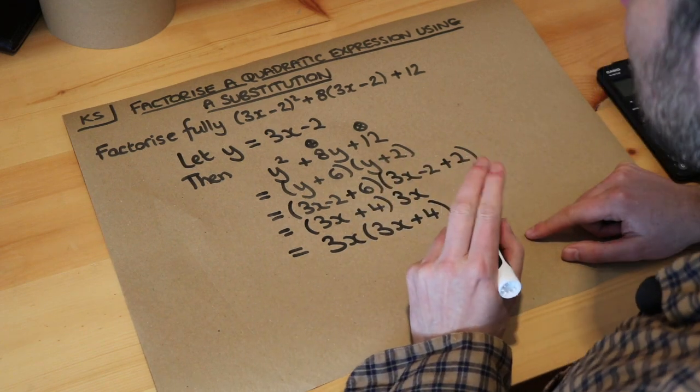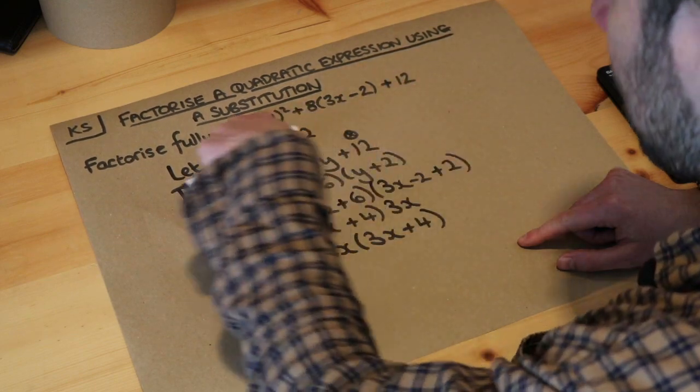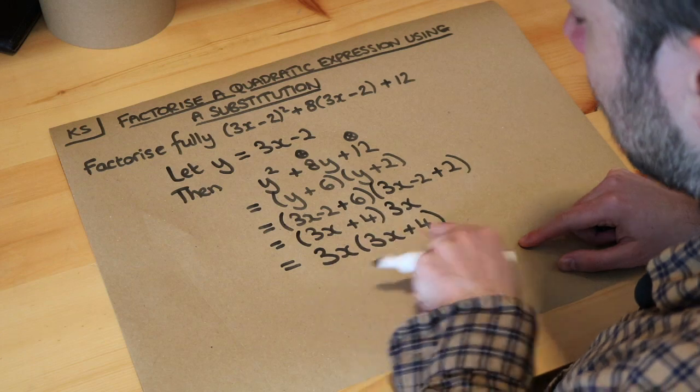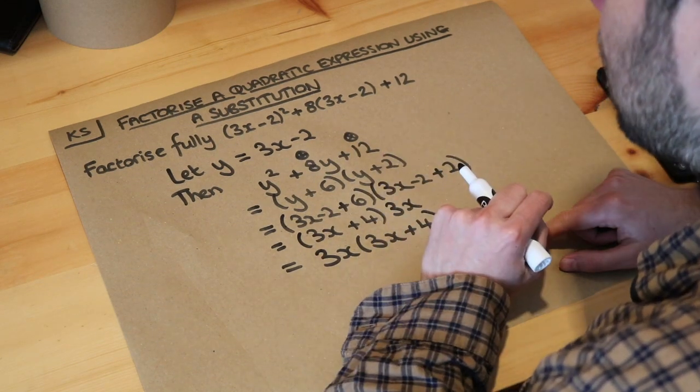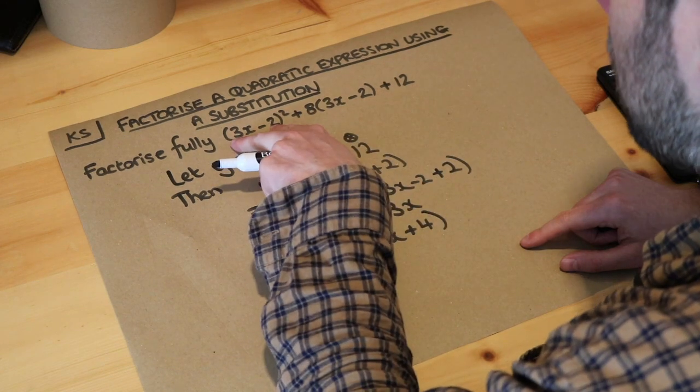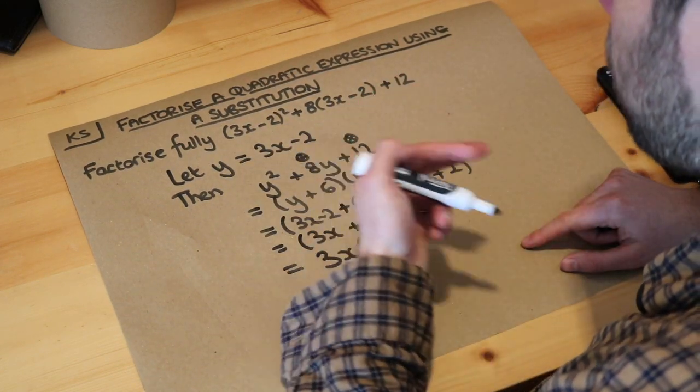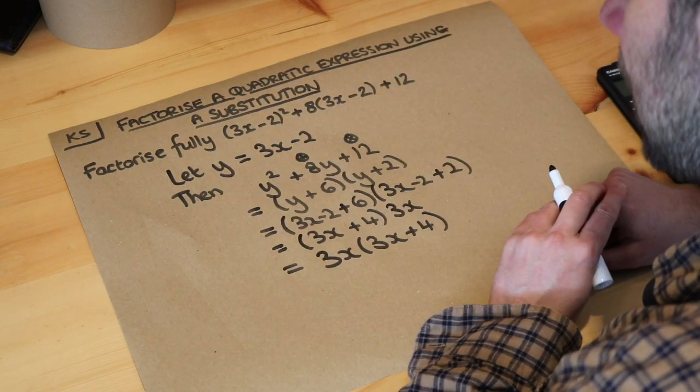Now I should point out it would have been perfectly acceptable to just expand out this original expression and then we would have got 9x squared plus 12x and then you could have factorised it because you have a common term in both those terms. But there's something nice about spotting that you have this common bracketed term of 3x minus 2 and then using that substitution because that can help you with harder questions where it wouldn't be so easy to just expand out and then factorise again.